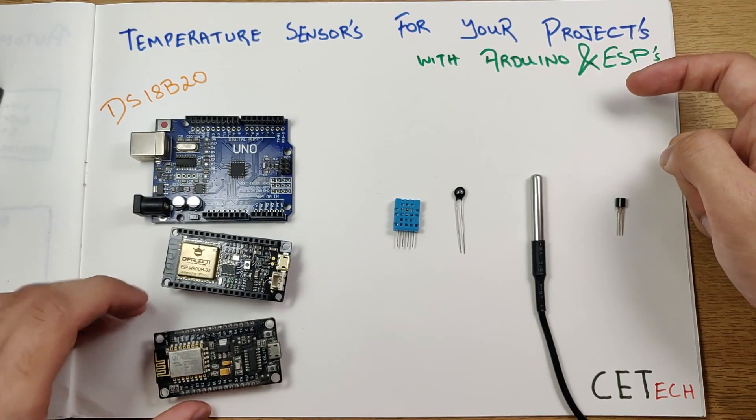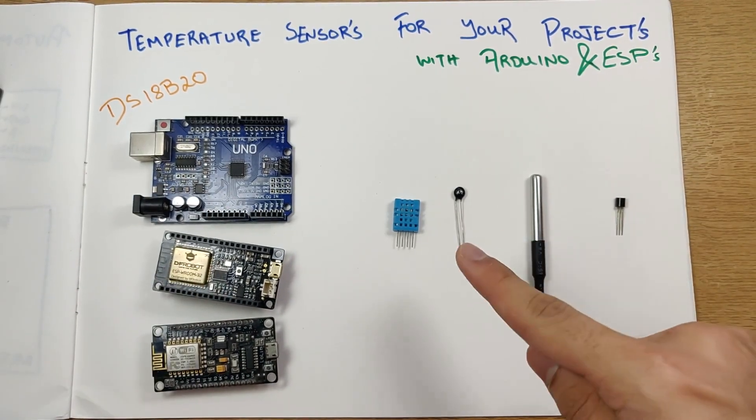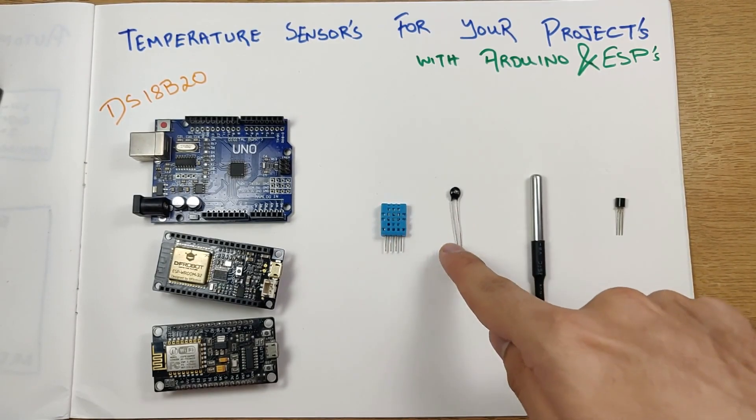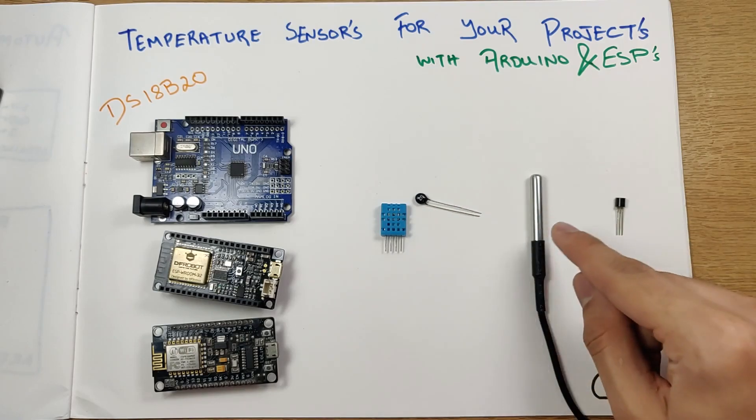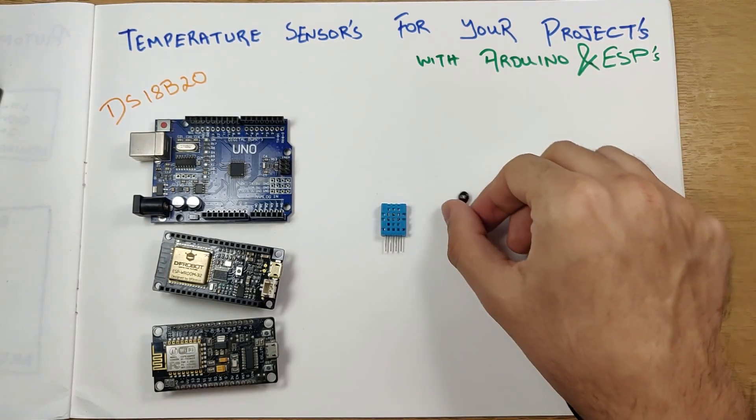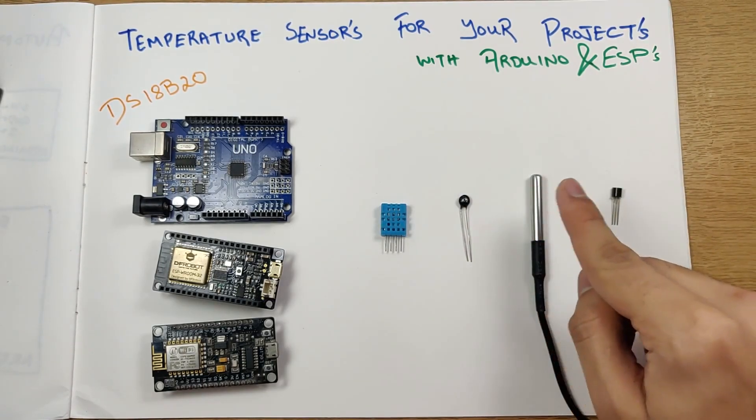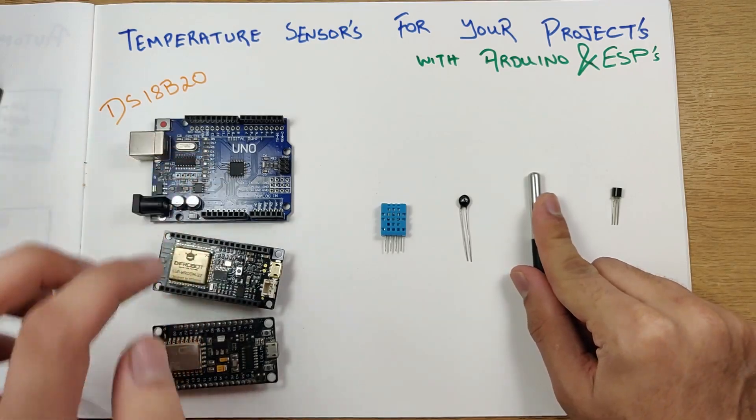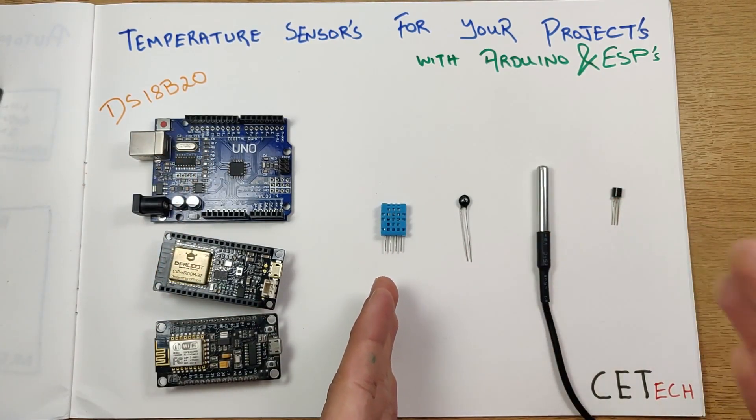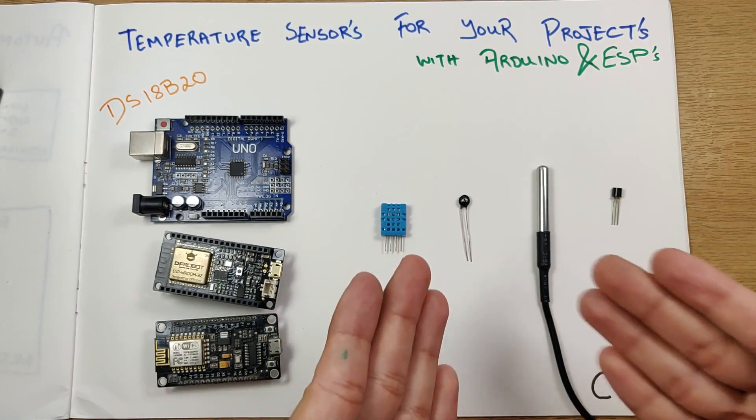We'll be looking at different temperature sensors, for example the DHT11, the classic thermistor, the DS18B20, and the DS18B20 in a different package. We'll be interfacing the DS18B20 with the Arduino and the ESP module today.